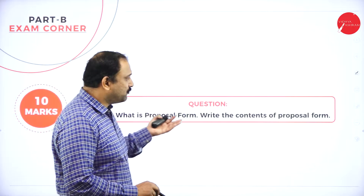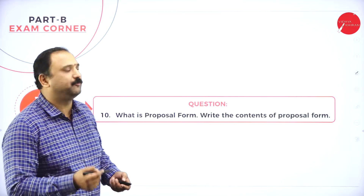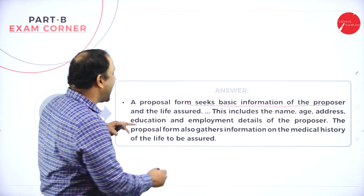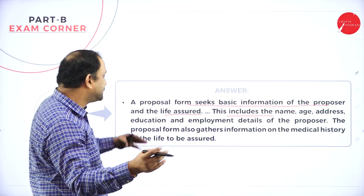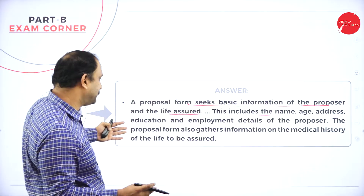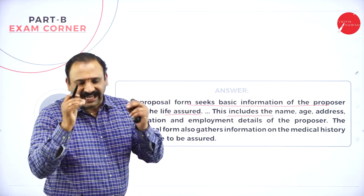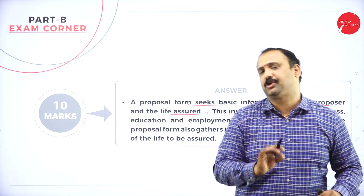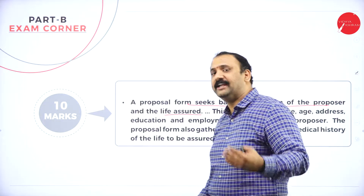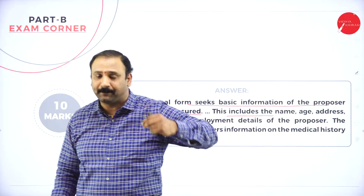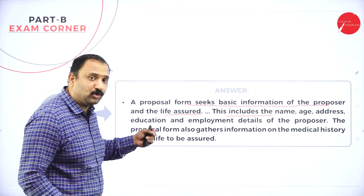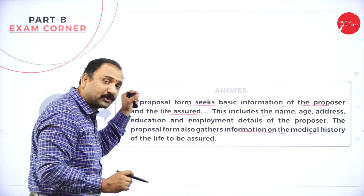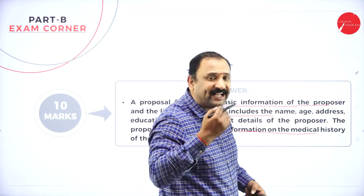The next question is: what is a proposal form and what are its contents? A proposal form seeks basic information of the proposer and the life assured, including name, age, address, education, and employment details. The proposal form is the first level information-gathering exercise that looks into all the historical details of the insured person. Every insurance company will provide a proposal form to be filled up by the person taking the insurance, including their medical history.